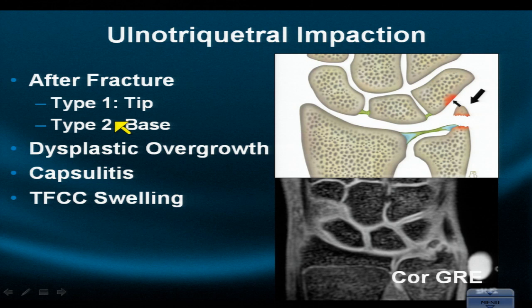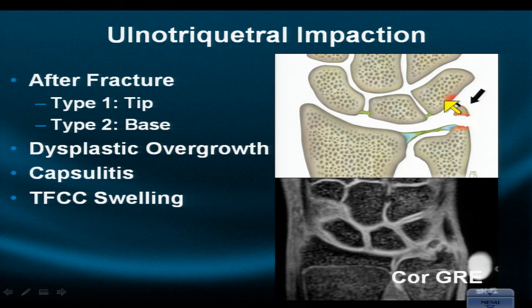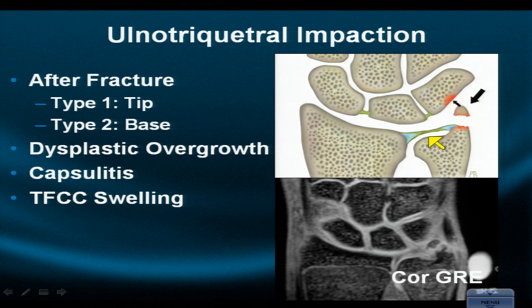If the ulna lies distal to the radius, patients are prone to ulna-lunate abutment syndrome and degenerative triangular fibrocartilage tears. Here is an example of ulno-triquetral impaction, which can occur as a result of a fracture at the tip or base of the ulnar styloid. When the patient is in ulnar deviation, these two structures may crush or crunch together. Be careful — this area of the triquetrum is normally undulated, and you should look for inflammation, cystic change, or an etched marginated erosion.